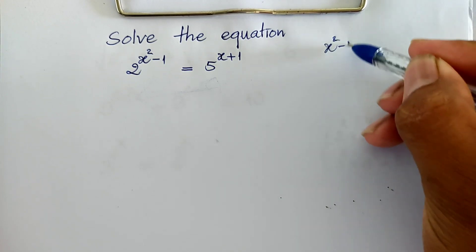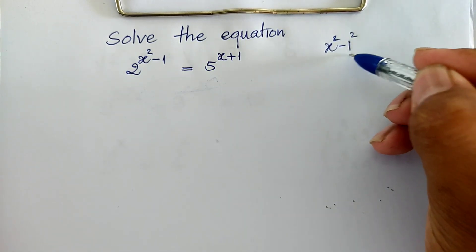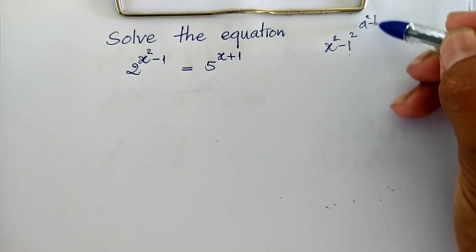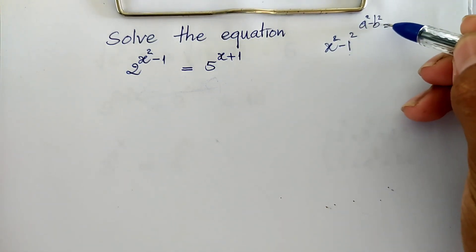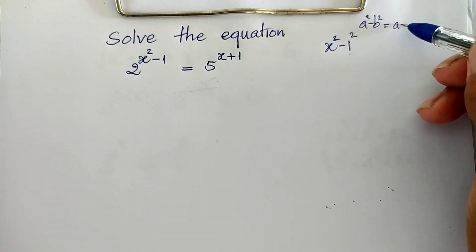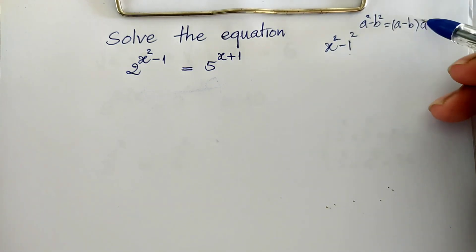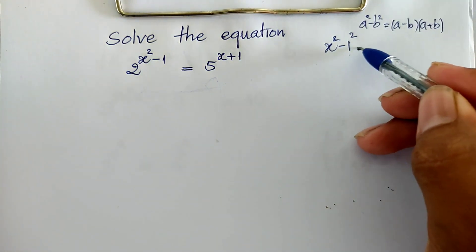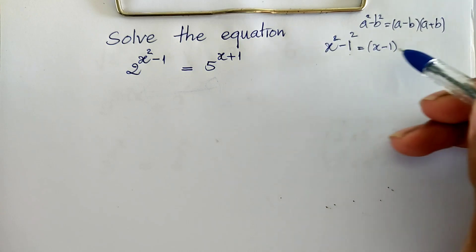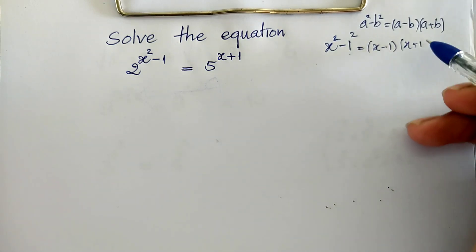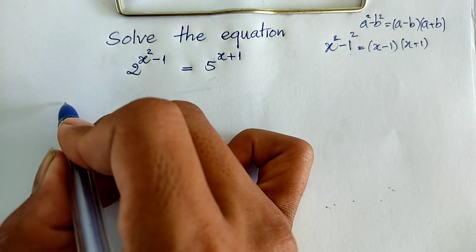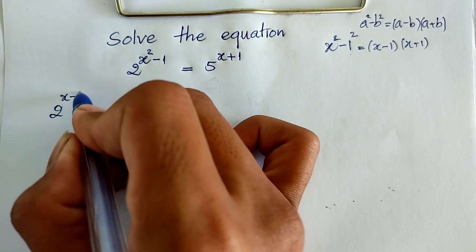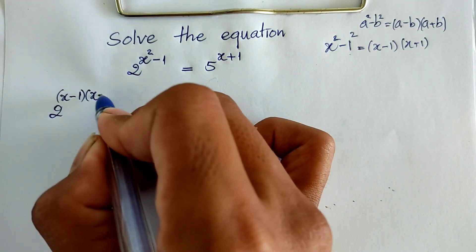This x squared minus 1, I can write it as x squared minus 1 squared. And using the rule that a squared minus b squared equals (a minus b) multiplied by (a plus b), I can write it as (x minus 1) multiplied by (x plus 1). So now I can write 2 to the power of (x minus 1)(x plus 1).